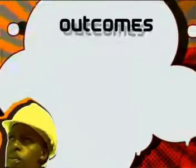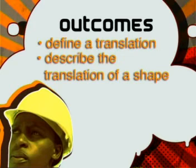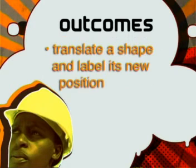In transformation geometry, we describe what happens to an object, a shape, a line, or a point when it is transformed or moved to a new position in space. There are three types of transformations. Today, we are going to look at one of them called translations. By the end of the lesson, you should be able to define a translation, describe the translation of a shape, and translate a shape and label its new position.